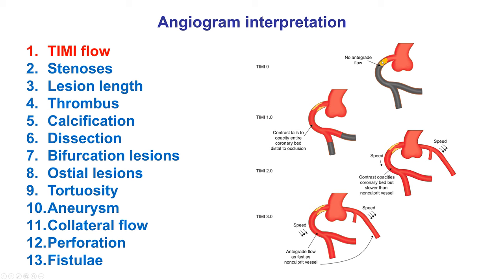TIMI 0 means complete occlusion without antegrade flow past the area of stenosis. TIMI 1 means there is flow past the stenosis, however it does not reach all the way to the end of the coronary artery. TIMI 2 means flow reaches the end of the artery, but the speed is slower than contrast flow in a contralateral coronary artery. TIMI 3 is normal antegrade coronary flow, with the same speed as contrast flow in a non-affected artery.